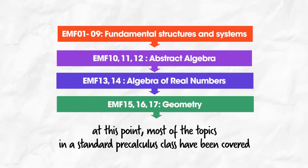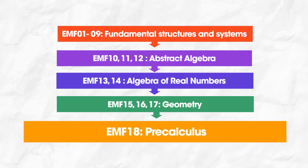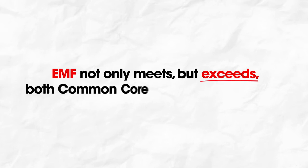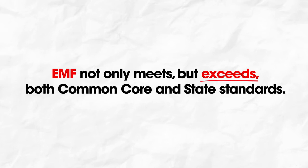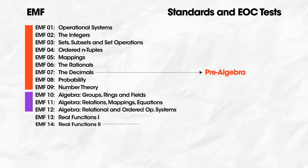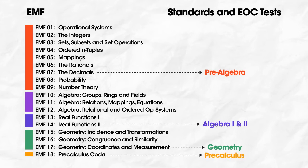At this point, most of the topics in a standard pre-calculus class have been covered. The few that remain are dealt with in the final EMF course. EMF not only meets, but also exceeds, both common core and state standards. Pre-algebra standards have been exhausted by the 7th EMF course, Algebra 1 and 2 standards by the 14th course, Geometry by the 17th course, and the pre-calculus standards by the last EMF course.